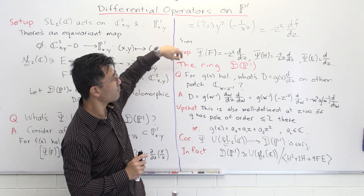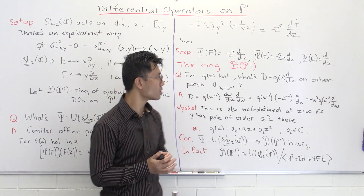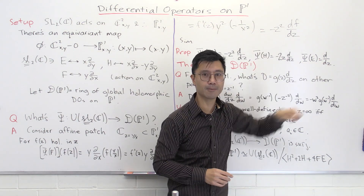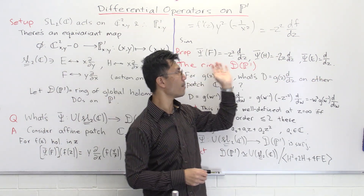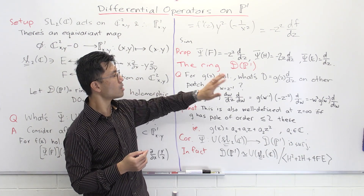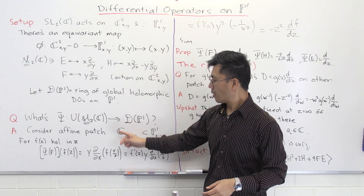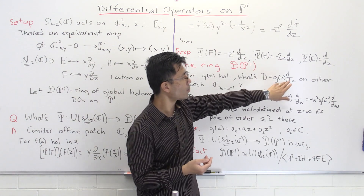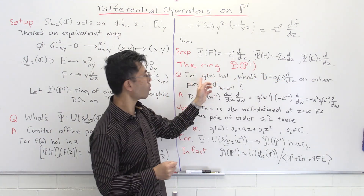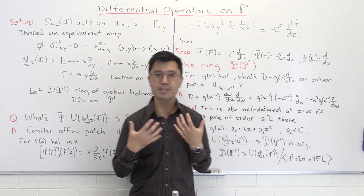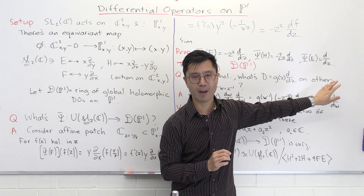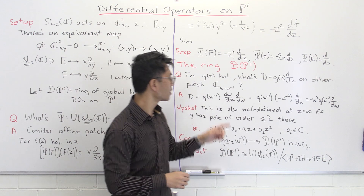The next thing is to look more carefully at the ring D(P1). We have elements psi(F) = −Z² d/dz, psi(H) = −2Z d/dz, and psi(E) = d/dz. We can take linear combinations and composites of these. But what else is in D(P1)? To answer that, let's look at a general first-order differential operator on C(Z): take D = g(Z) d/dz for some function g. The question is whether this is well defined not just on the affine patch, but also at the point at infinity.